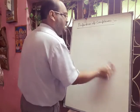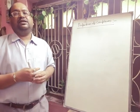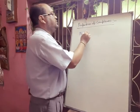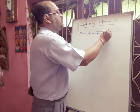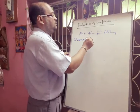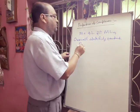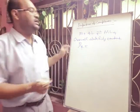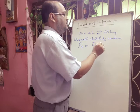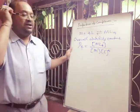Next we discuss stepwise stability constants and the overall stability constant. Consider a metal M reacting with four ligands to form ML4. The overall stability constant is written as β4, and it equals the concentration of [ML4] divided by the concentration of M multiplied by the concentration of L to the power 4.